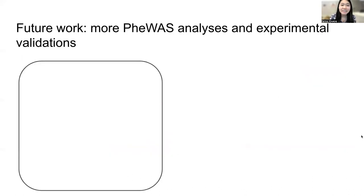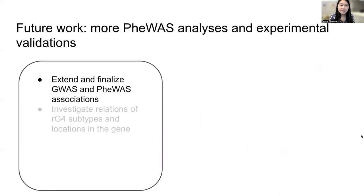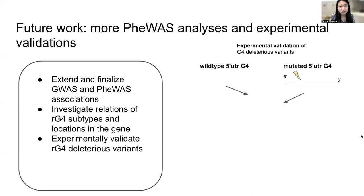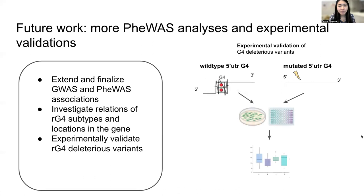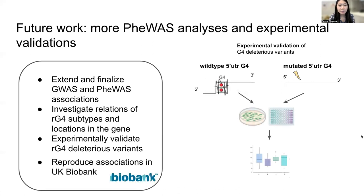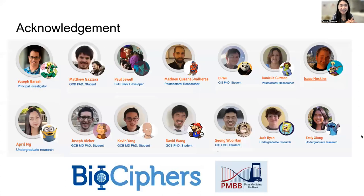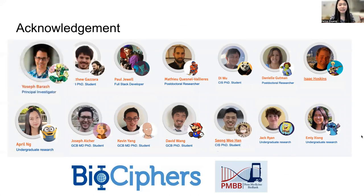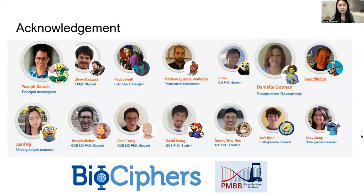For our future work, we want to extend and finalize GWAS and PheWAS associations, investigating relations of RG4s to subtypes and specific locations in the gene. We will also be performing experimental validation in our lab, measuring the effects at the protein level of associated genes in the absence and presence of G4 deleterious variants predicted by G-former. Lastly, we will be reproducing disease associations in the UK Biobank. I'd like to thank my colleagues in the BioCyphers Lab, especially my advisor Yosef, as well as Danielle for being an amazing collaborator and contributor, and Paul for contributing to the PheWAS analysis.